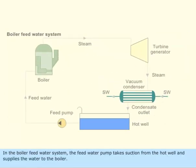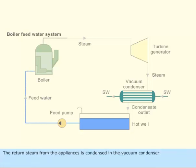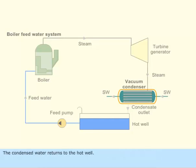In the boiler feed water system, the feed water pump takes suction from the hot well and supplies the water to the boiler. The returned steam from the appliances is condensed in the vacuum condenser. The condensed water returns to the hot well.